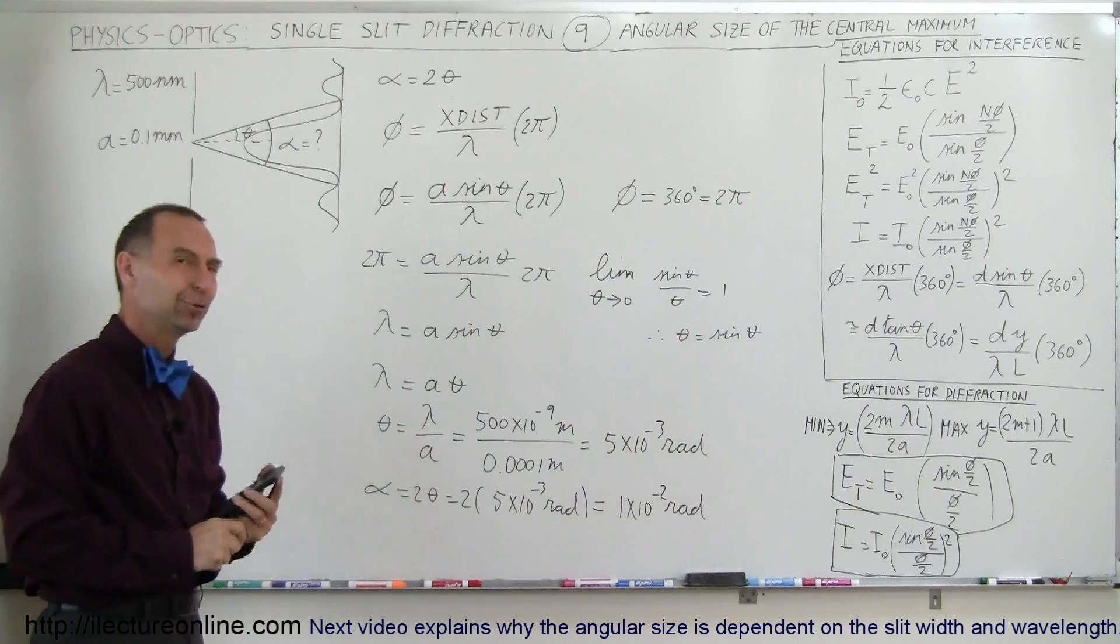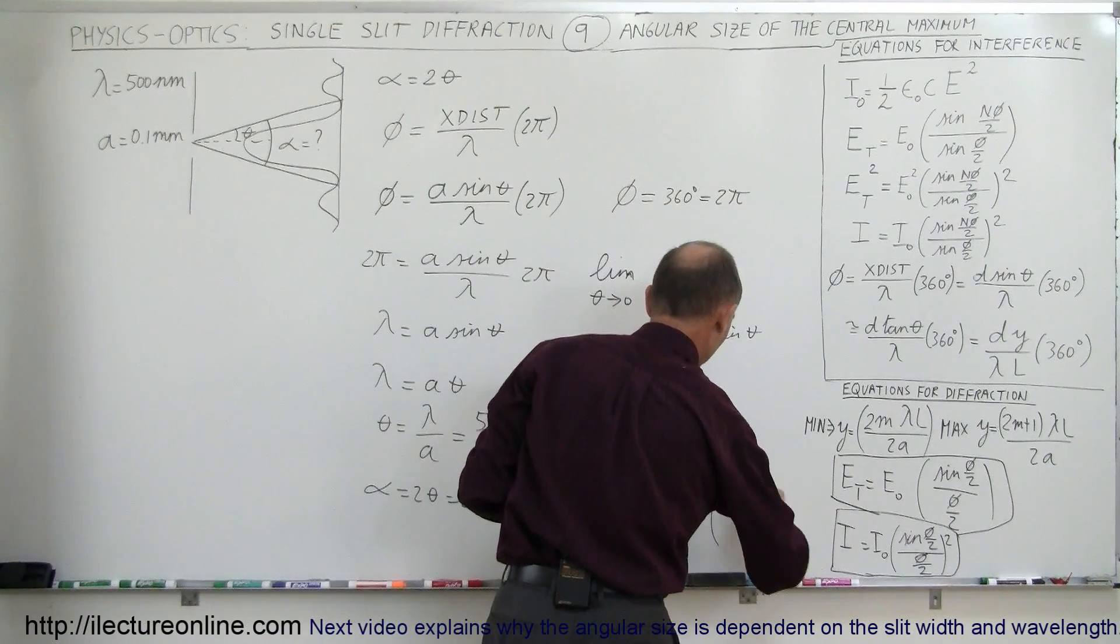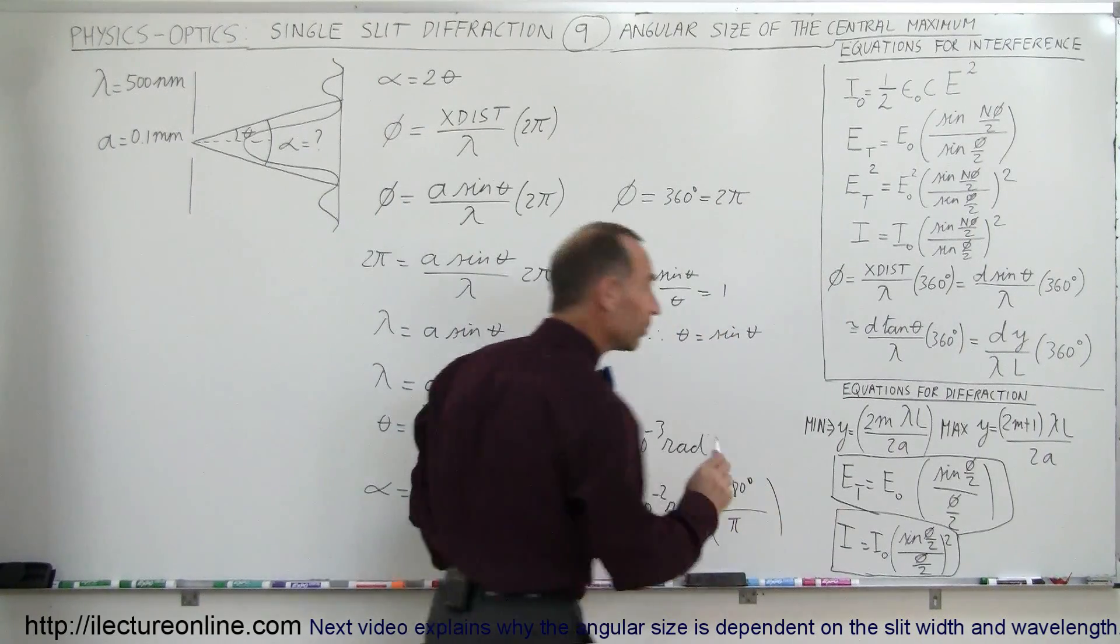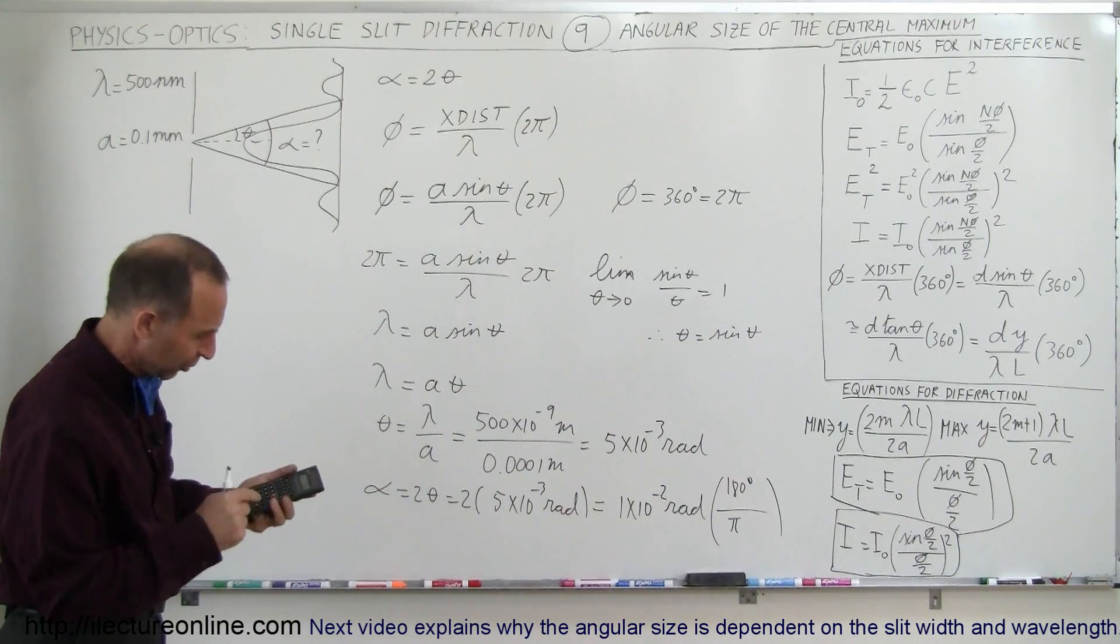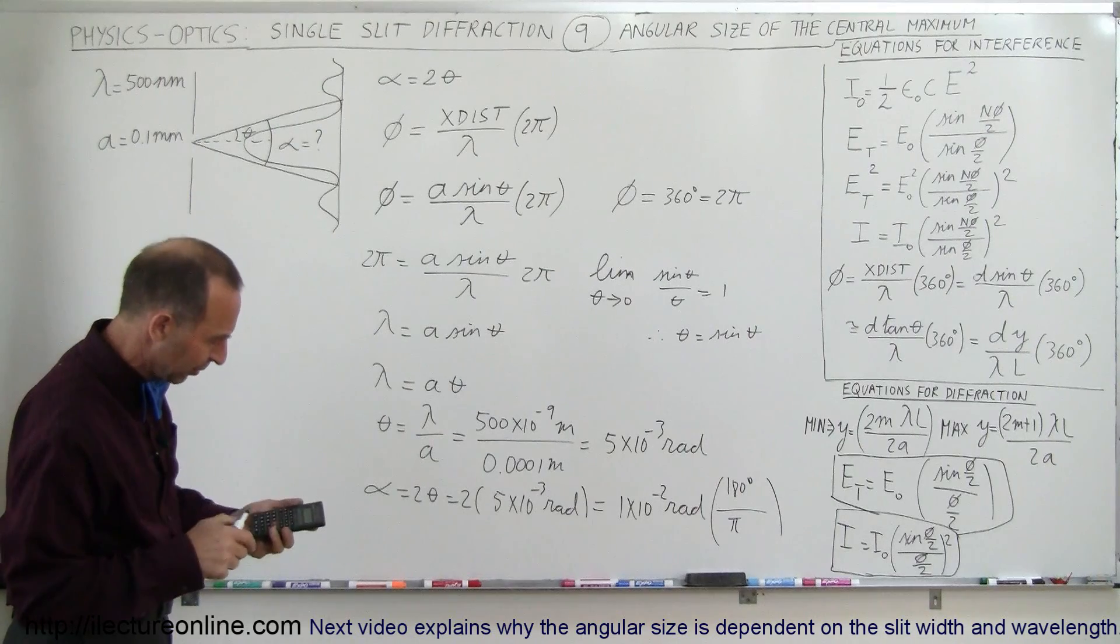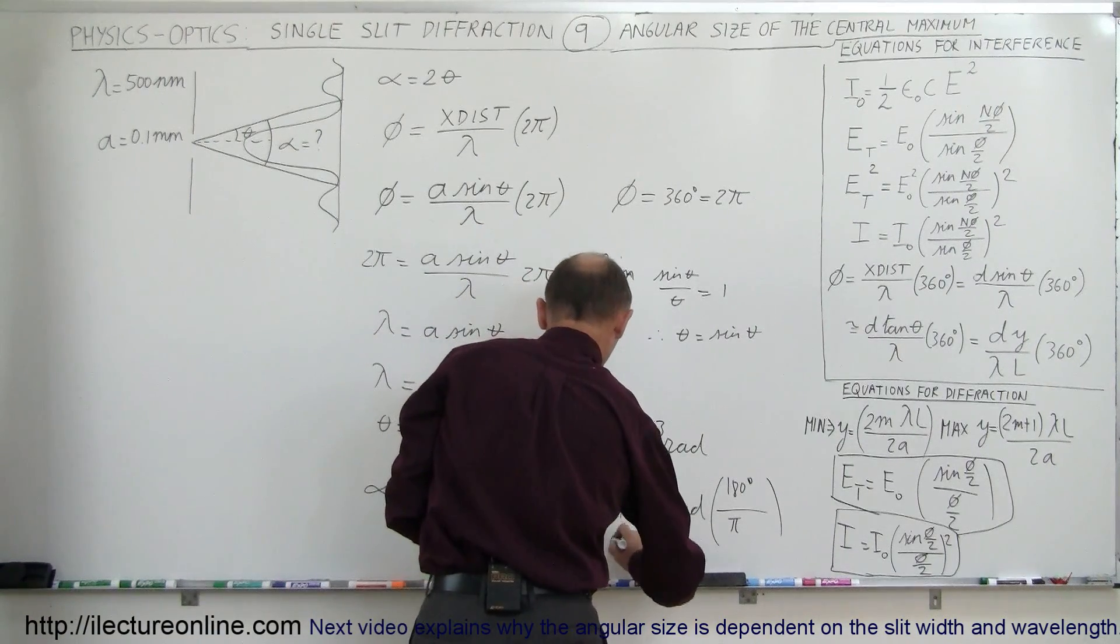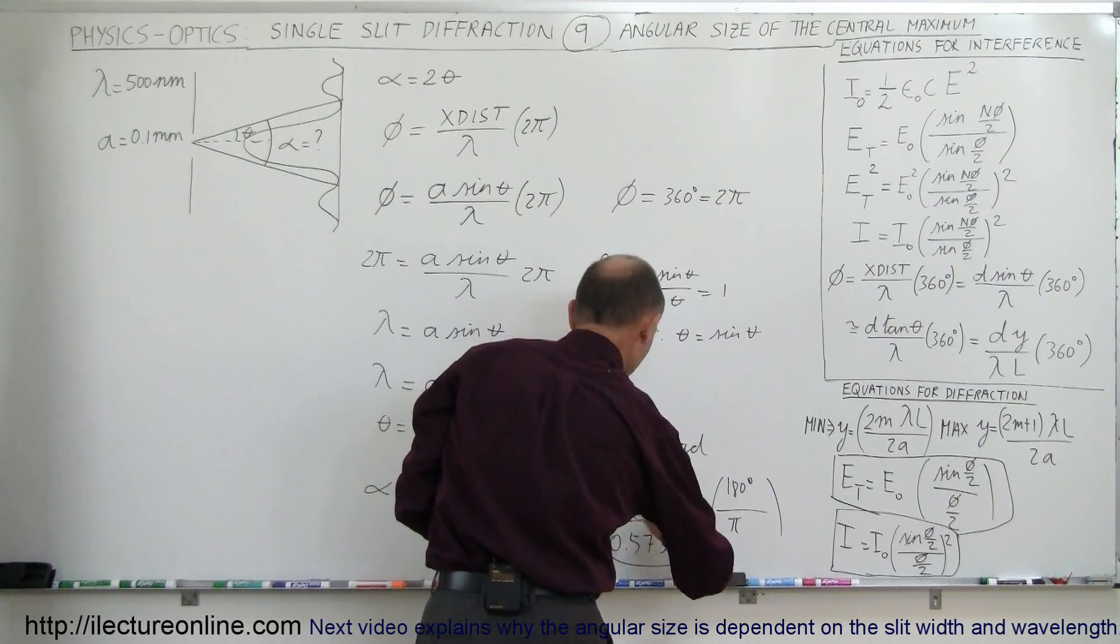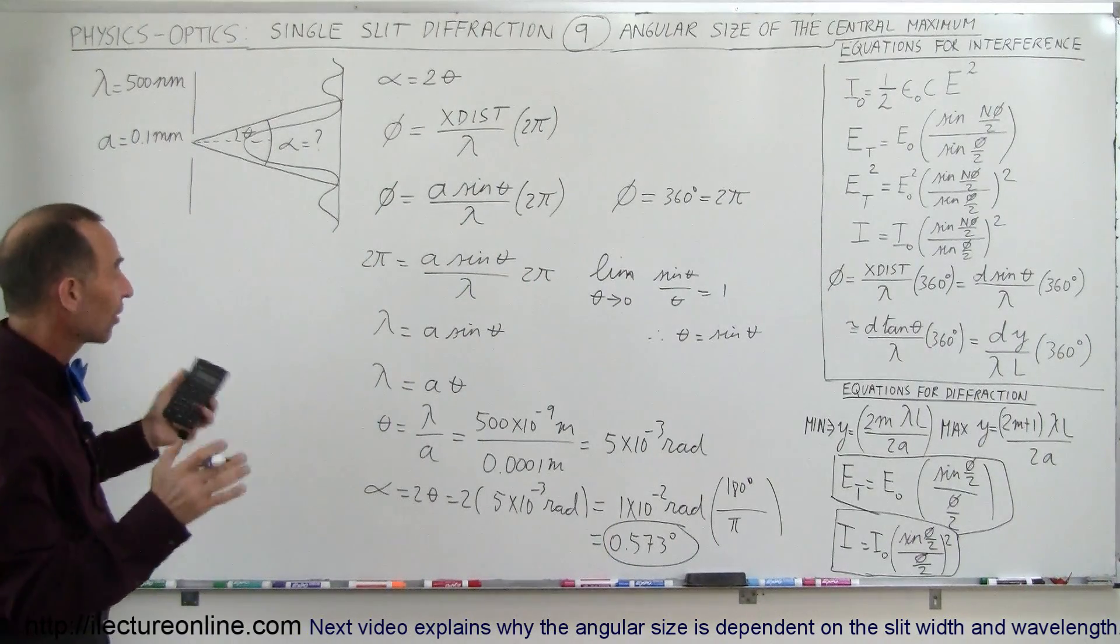Now converting that to degrees, we have to multiply that times 180 degrees divided by pi. And I had just forgotten what that number was, is it 53.7 or is it 57.3? Wasn't quite sure. So I'll multiply this times 180 divided by pi equals, and I get 0.573, so that would be 0.573 degrees, and that would be the angular size of the central maximum.